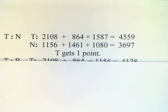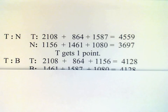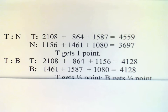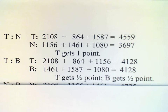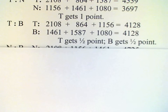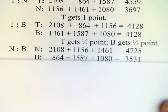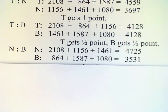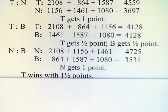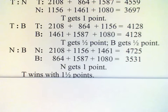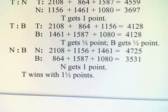Then we do the same thing for each of the other two possible comparisons. T versus B turns out to be exactly tied, so T and B each get half a point. And finally we look at N versus B: N has 4,725 and B has 3,531, so N gets a point. Then we see that T wins with one and a half points.